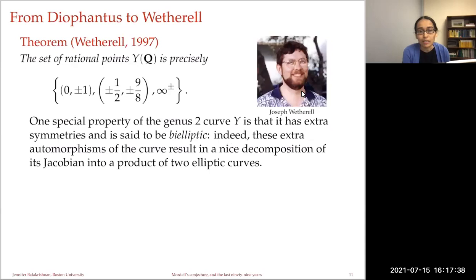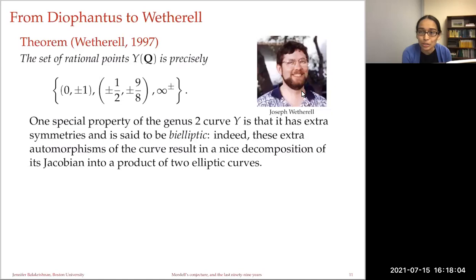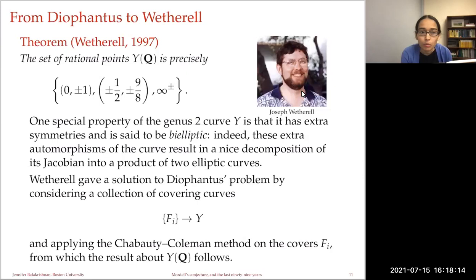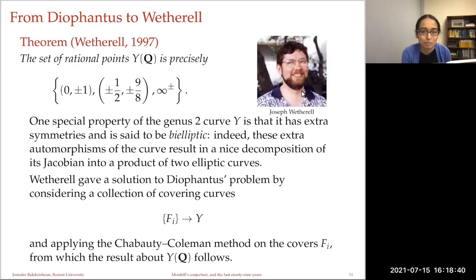One nice property about this genus two curve is that it has extra automorphisms — it's a phi-elliptic genus two curve. In addition to the usual hyperelliptic involution there's an involution in x. This extra automorphism lets us decompose the Jacobian as a product of two elliptic curves, each of rank one. Wetherell considered a collection of covering curves and applied Chabauty-Coleman on quotients of the covers, finding two genus three curves — one with rank zero and one with rank one — and then pulled things back to the original curve.